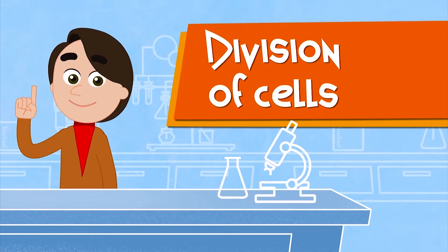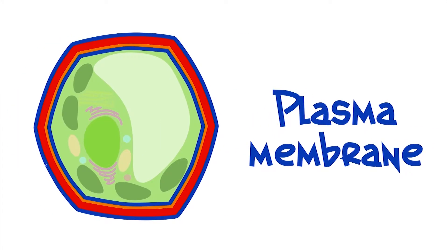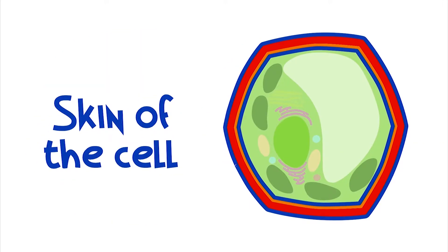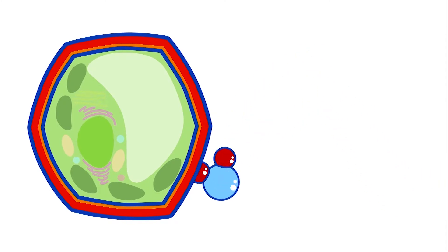Let's see then. Most cells have three parts. The plasma membrane, which is a very thin but very resistant wall surrounding the cell. It functions as if it were the skin of the cell, allowing the entry of useful substances.